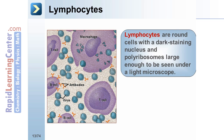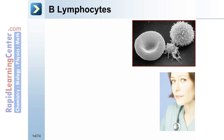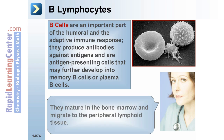Lymphocytes are round cells with a dark-staining nucleus and polyribosomes large enough to be seen under a light microscope. Natural killer cells are large, granular lymphocytes, and T and B cells are small lymphocytes. B lymphocytes, also called B cells, are an important part of the humoral and adaptive immune response. They produce antibodies against antigens and are antigen-presenting cells that may further develop into memory B cells or plasma B cells. They mature in the bone marrow and migrate to the peripheral lymphoid tissue.